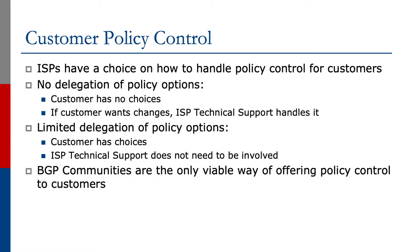In this section we're going to talk about how you could give policy control to customers. ISPs have two main options: either no delegation of policy options, meaning the customer has no choices and the ISP technical support must manually handle any changes, or limited delegation of policy options where the customer has certain choices from a fixed menu without needing ISP support. The only viable way to implement limited delegation is by using BGP communities.